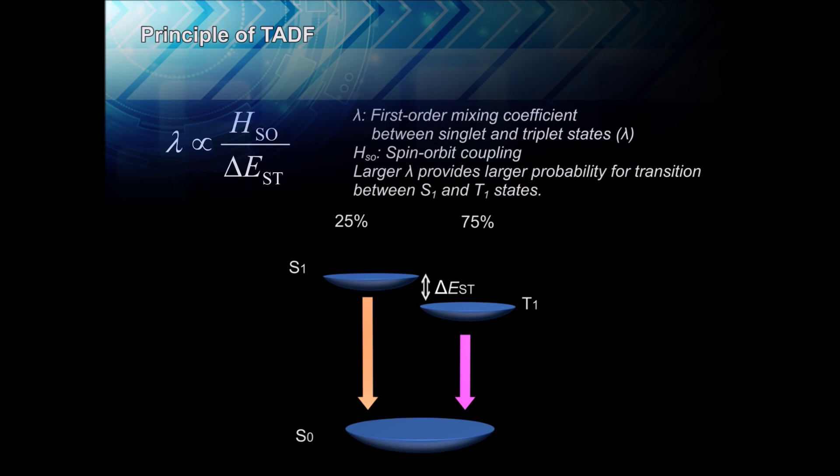In both fluorescent and phosphorescent materials, the energy of triplets is substantially lower than that of the singlets, resulting in a large energy gap between the two. The key characteristic of materials emitting thermally-activated delayed fluorescence, or TADF, is a small delta EST.